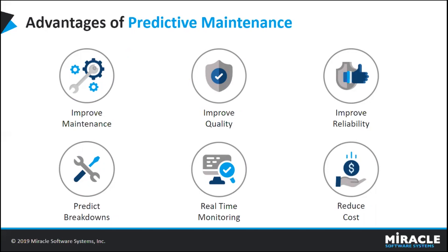Predictive Maintenance also predicts breakdowns in real time. You will be alerted when a breakdown occurs, helping you take necessary actions to recover. This can all be done with real-time monitoring, which is the biggest advantage of Predictive Maintenance. Additionally, this can be done at low cost — with regular maintenance, you avoid the high cost of replacing the system entirely.